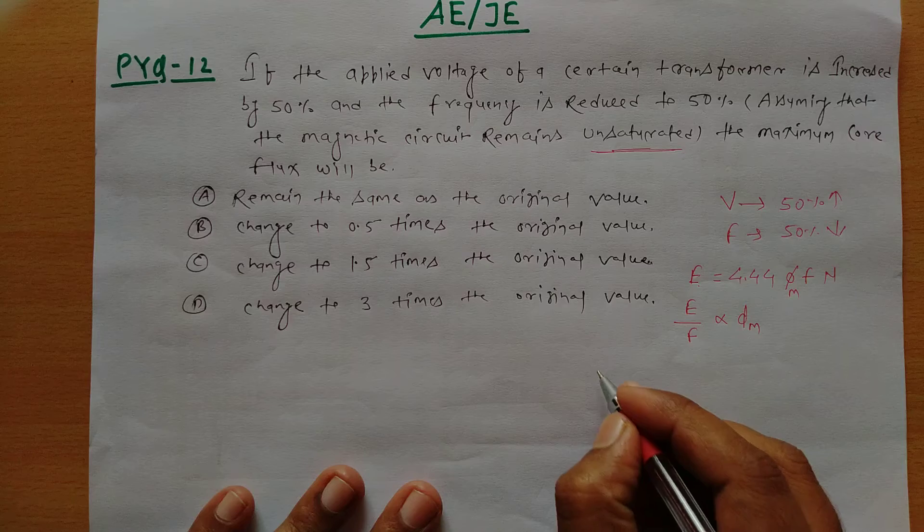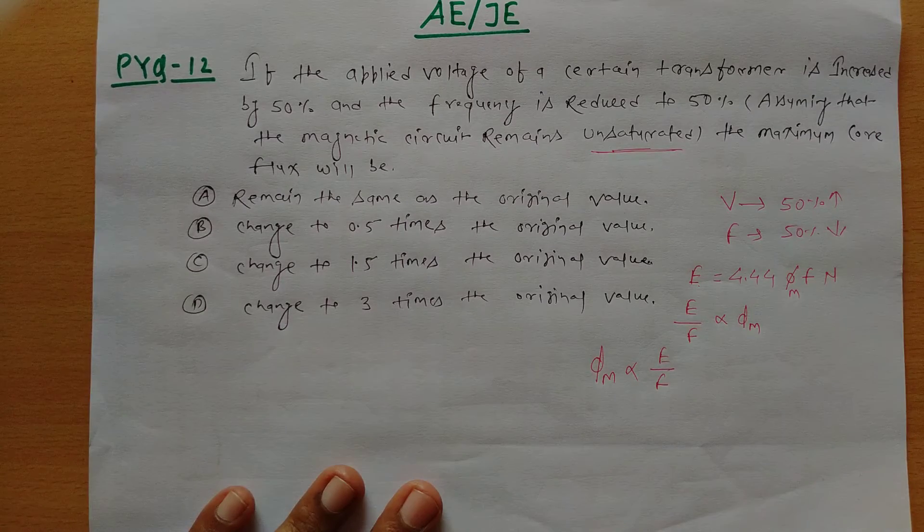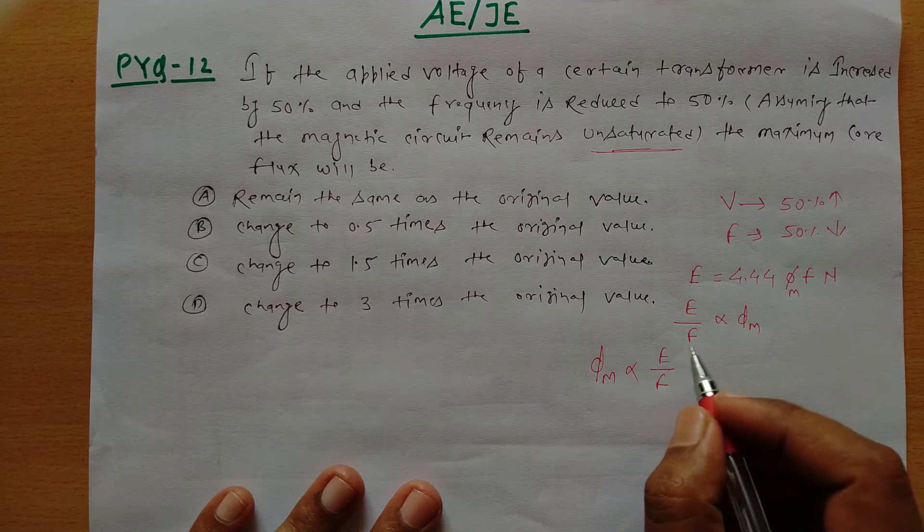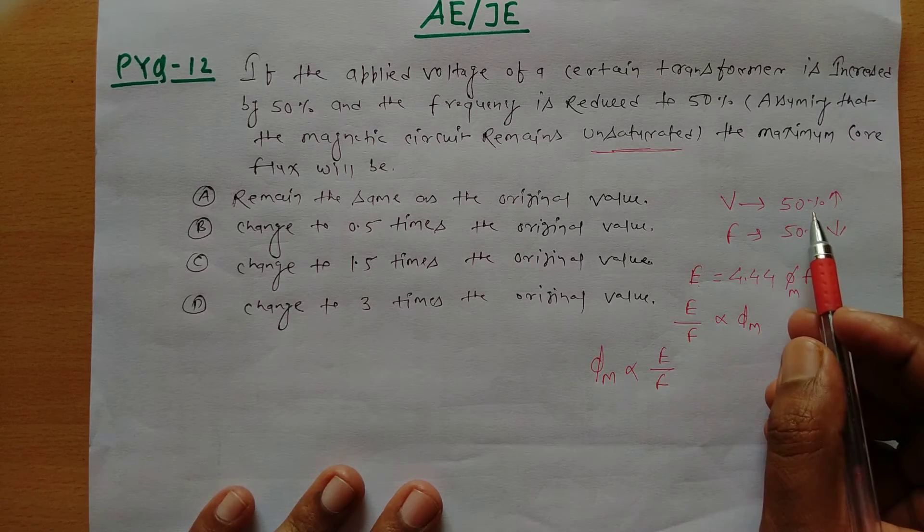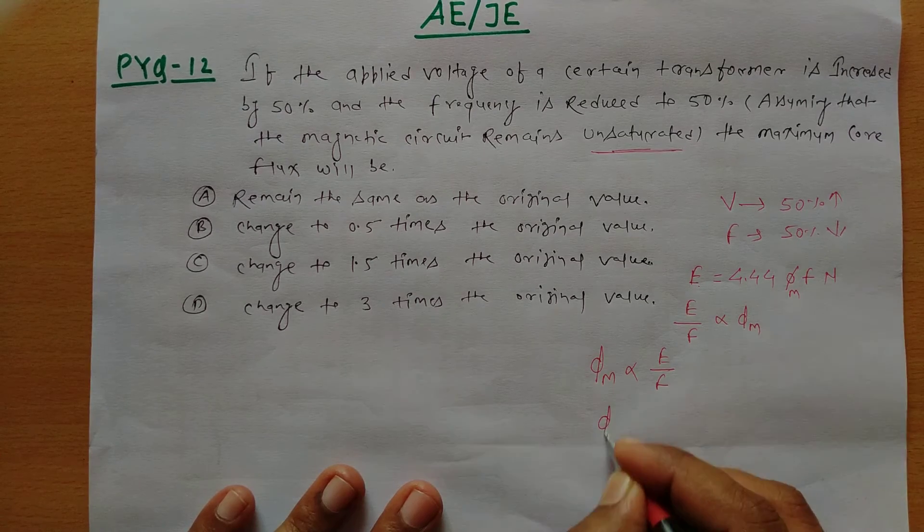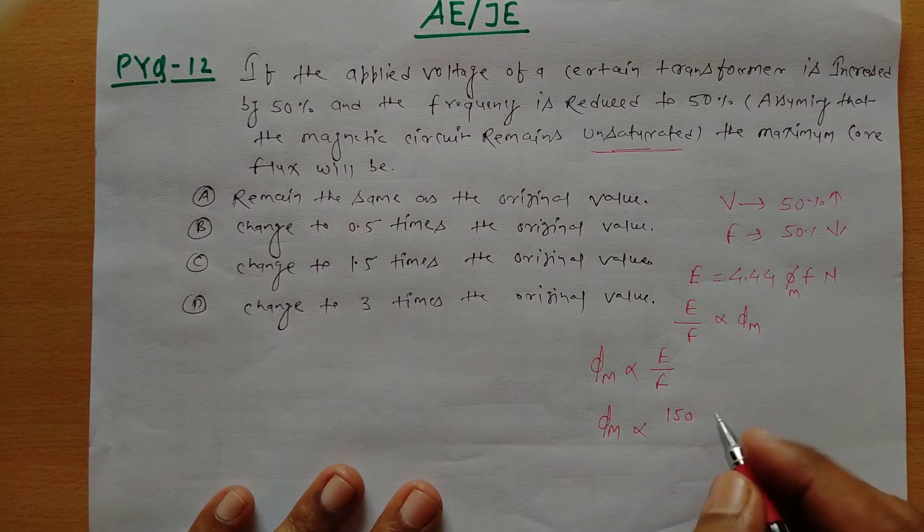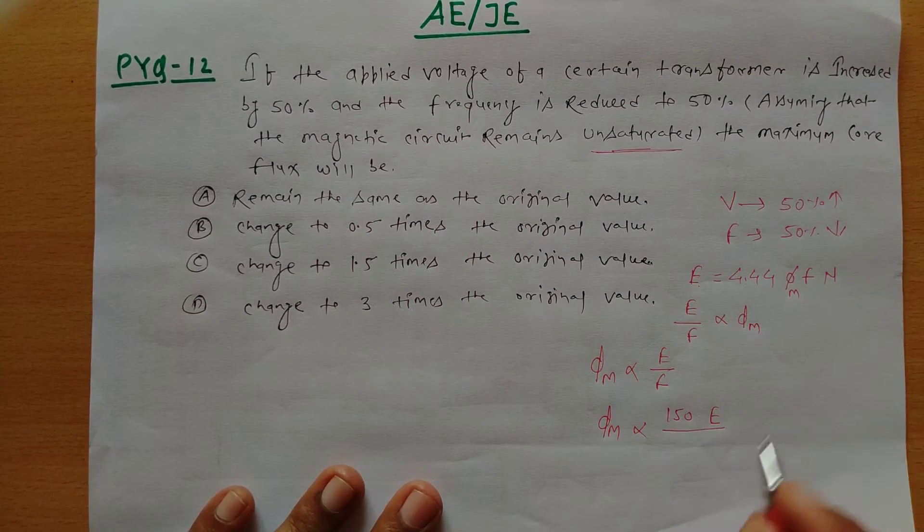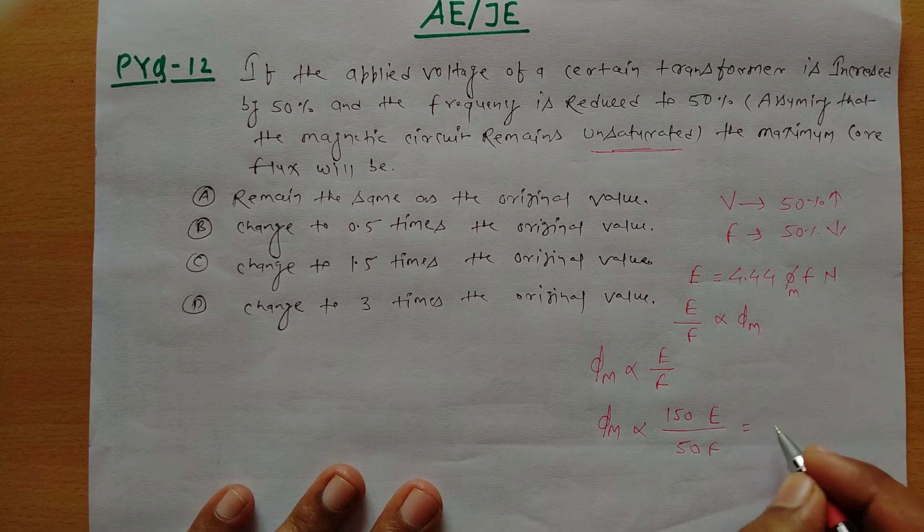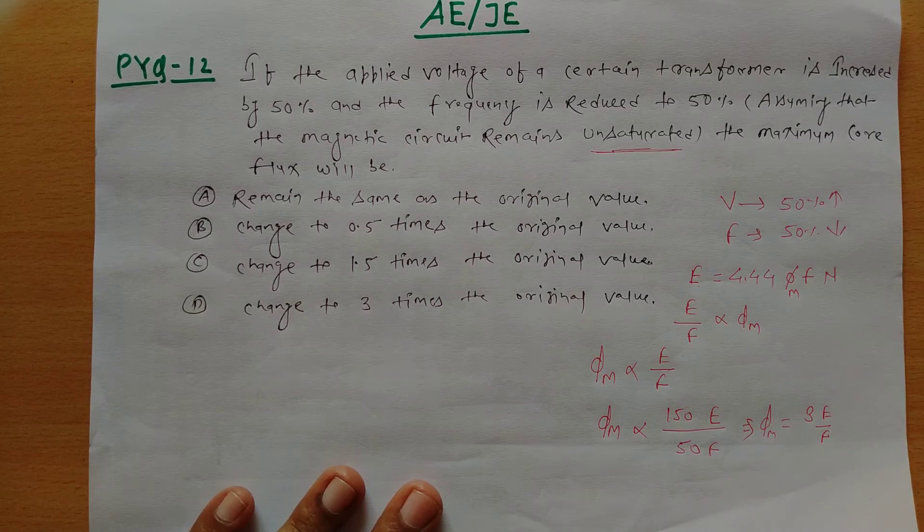So you see, if we say φm is proportional to E by f, if the induced EMF increases by 100 percent, it becomes 150. And frequency decreases by 50%, so 100 minus 50 becomes 50. If we solve this, what do we get here? This becomes 150 divided by 50.